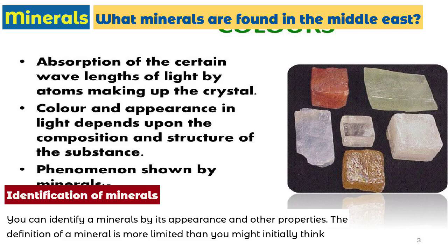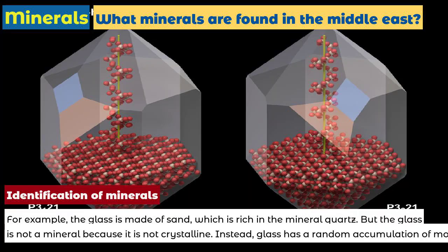You can identify a mineral by its appearance and other properties. The definition of a mineral is more limited than you might initially think. For example, glass is made of sand, which is rich in the mineral quartz. But glass is not a mineral because it is not crystalline. Instead, glass has a random accumulation of molecules.